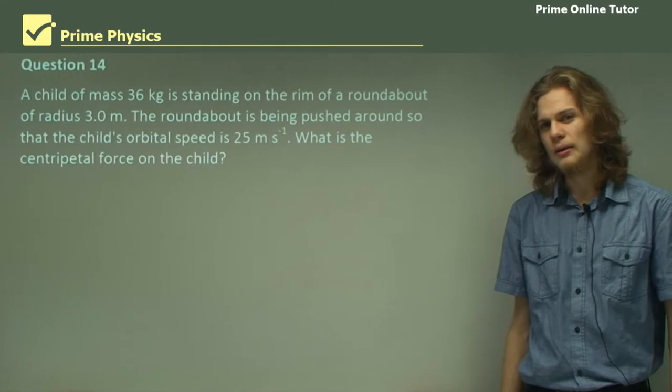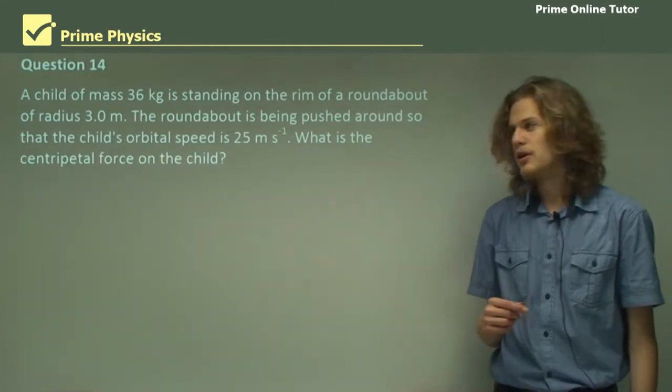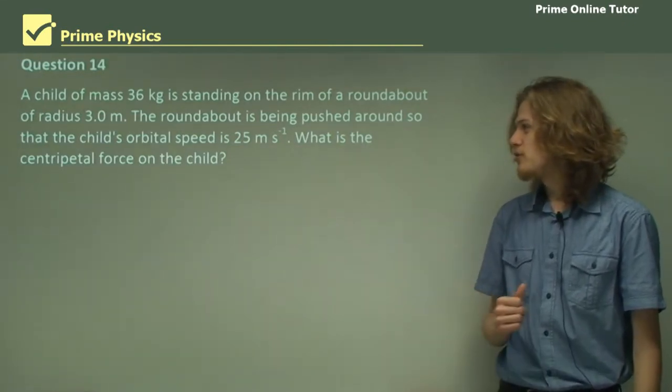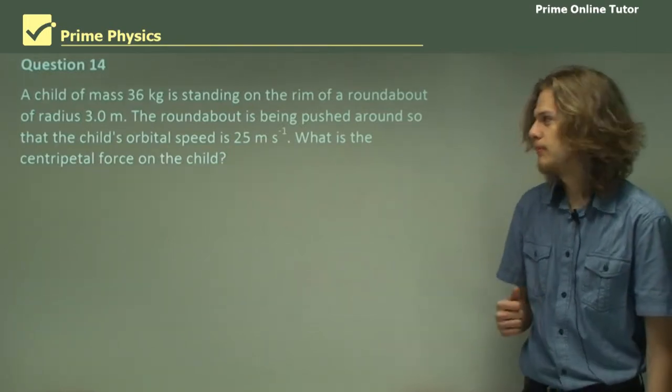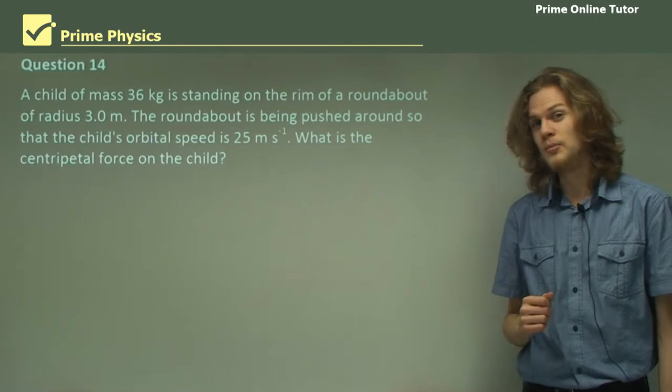Question 14. A child of mass 36 kilograms is standing on the rim of a roundabout, radius 3 meters. The roundabout is being pushed around so the child's orbital speed is 25 meters per second. What's the centripetal force on the child? I imagine it's going to be quite large.